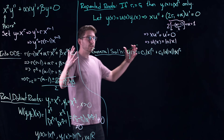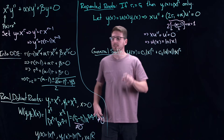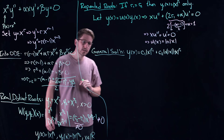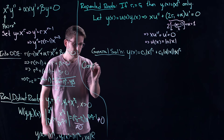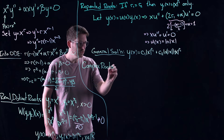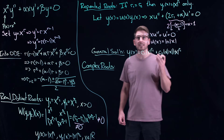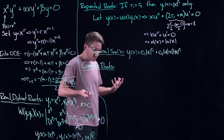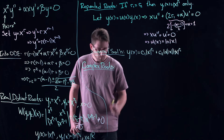We're two out of three cases done. The last case is complex roots. Previously with exponentials, complex roots led to sine and cosine terms giving oscillations. The question is what happens here with Euler equations when the discriminant is negative and we get complex roots.